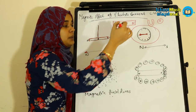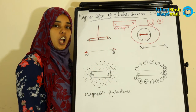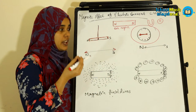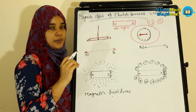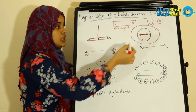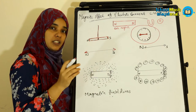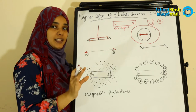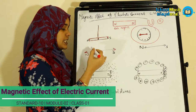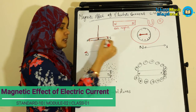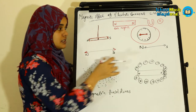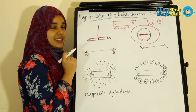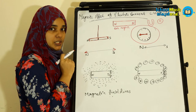Now, this is the compass. The magnetic compass itself is a magnet. It can indicate the direction — that's why the magnetic compass points to the direction.